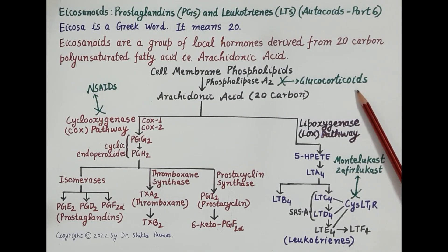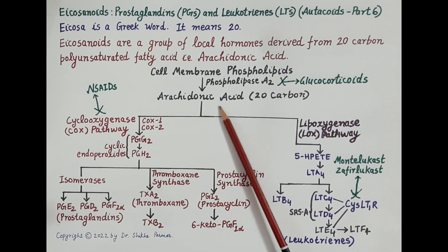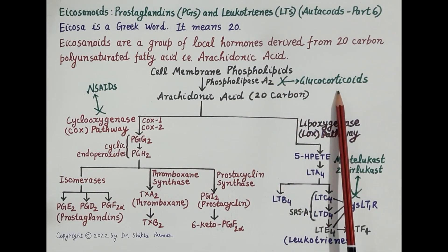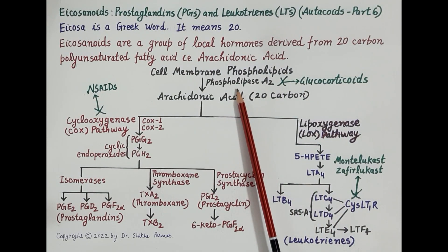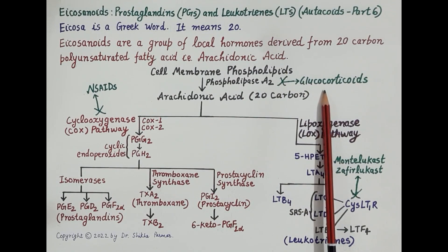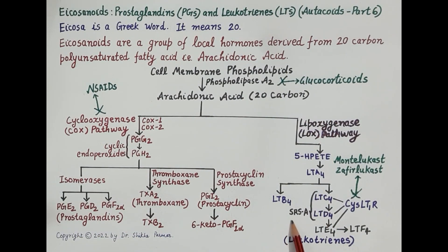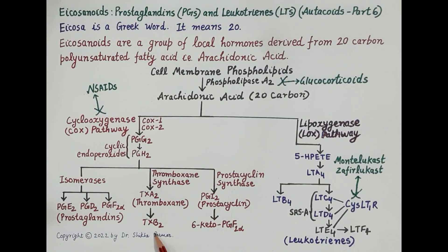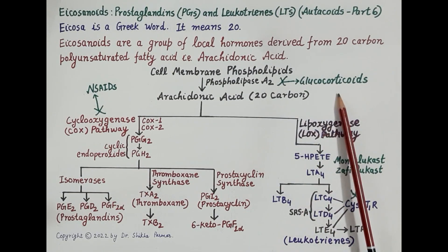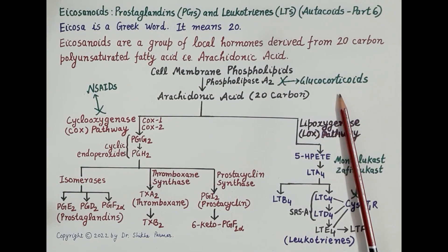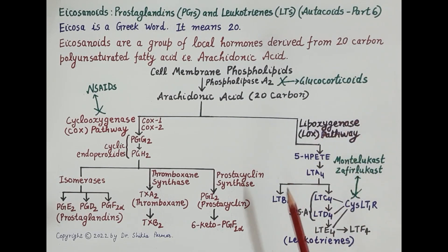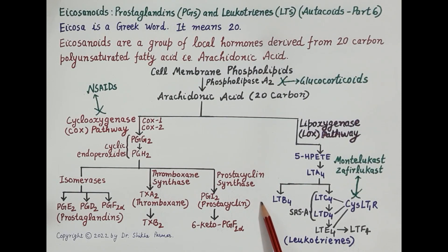Glucocorticoids inhibit the release of arachidonic acid from membrane phospholipids by inhibiting the enzyme phospholipase A2. Thus, glucocorticoids reduce production of all eicosanoids — prostaglandins, thromboxane, and leukotrienes — making them broad-spectrum anti-inflammatory agents with a wide range of biological effects. This concludes the introduction to eicosanoids: prostaglandins, prostacyclin, thromboxane A2, and leukotrienes.